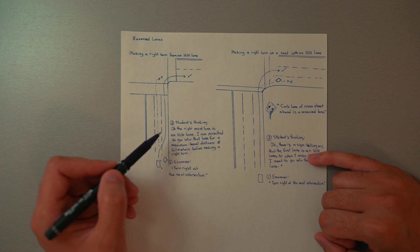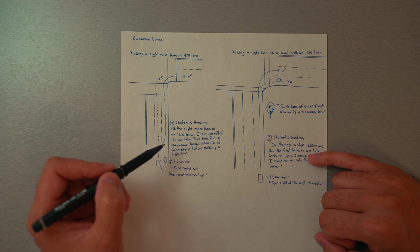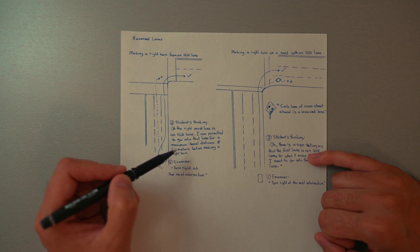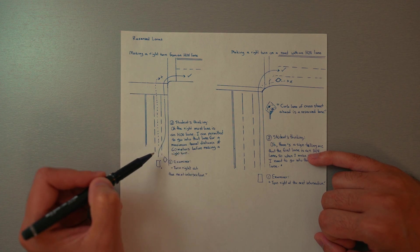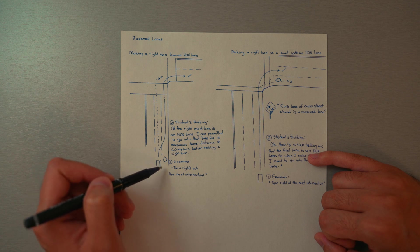So we signal, shoulder check, check for any buses or any other vehicles in this lane, and we'll come into this lane so we can make the maneuver like so.